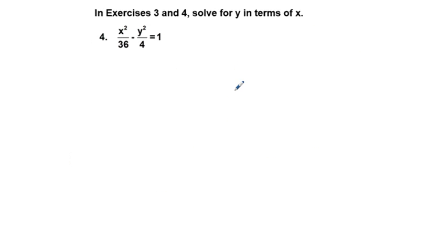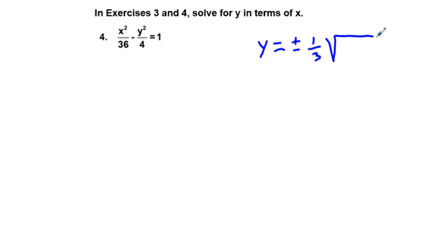For problem 4, if you work it out, you should get y equals plus or minus one-third times the square root of the quantity (x² minus 36).